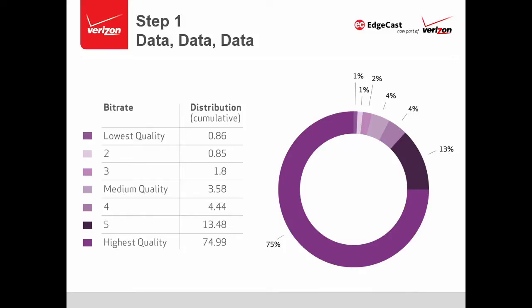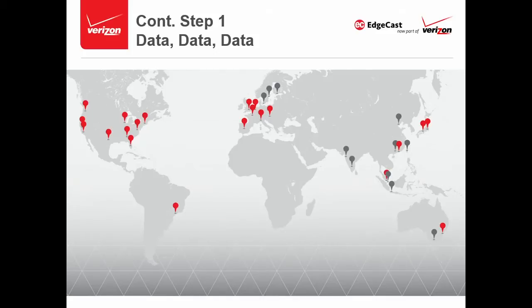One of the challenges we get when customers come to us and say they need us to support a large event is that they give us an end user number — we need you to scale for X number of end users — but we're a bandwidth business. So we rely very heavily on our data, and we analyze stream usage and traffic patterns to understand how we translate the end user number into bandwidth. We also analyze our traffic distribution across all of our points of presence, and from there we're able to identify which PoPs we need to scale for network capacity. We hand this off to our network engineering team who then scale us up by terabytes in a matter of months.